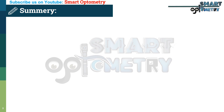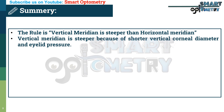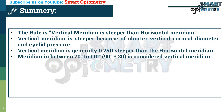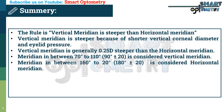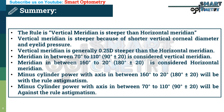Summary of this video: The rule is that the vertical meridian is steeper than the horizontal meridian. The vertical meridian is steeper because of the shorter vertical corneal diameter and eyelid pressure. The vertical meridian is generally 0.25 diopters steeper than the horizontal meridian. Meridians between 70 and 110 degrees are considered vertical, and meridians between 160 and 20 degrees are considered horizontal. Minus cylinder power with axis between 160 and 20 degrees is with the rule astigmatism, and minus cylinder power with axis between 70 and 110 degrees is against the rule astigmatism.